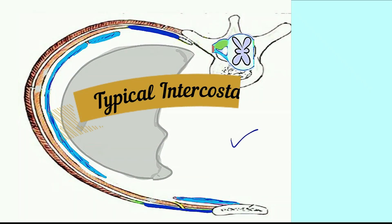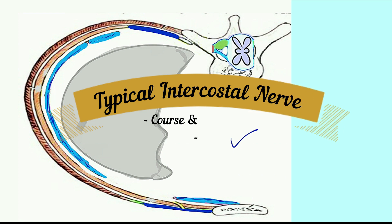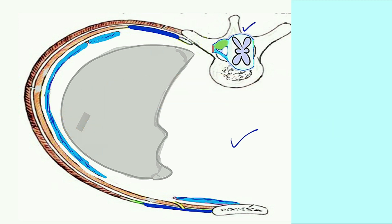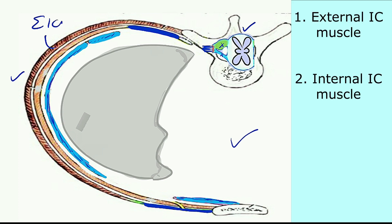In this diagram I will demonstrate the course and branches of the intercostal nerve. Here we have the spinal cord in the vertebral canal with a dorsal root and a ventral root joining to form the spinal nerve. This is the thoracic wall. It has an external intercostal muscle, then an internal intercostal muscle.